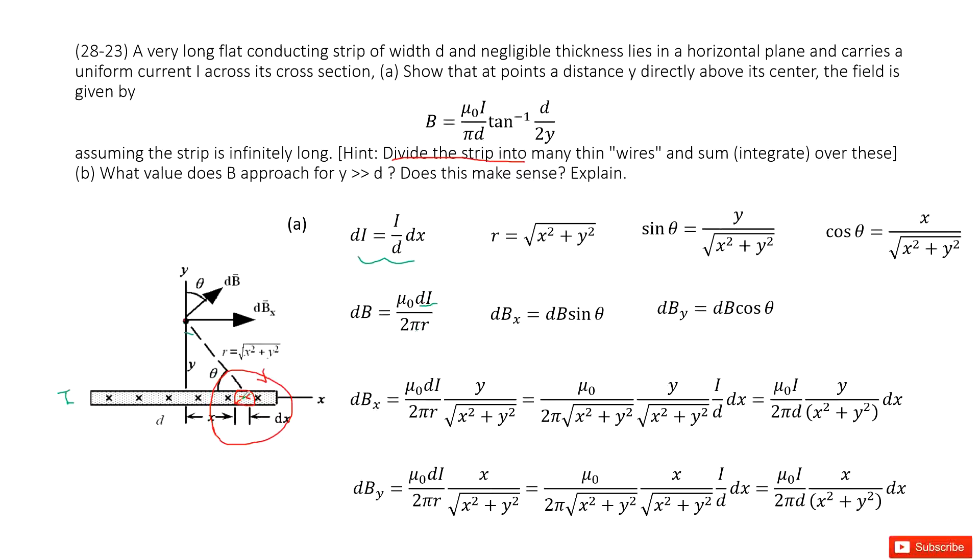Now r is the distance from this fraction to the reference point. So this one is r equals √(x² + y²). And then we can get sin θ and cos θ in this triangle.